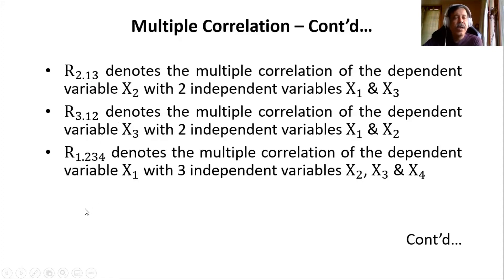It need not be only 3 variables. It can be more than 3 also. For example, R1.234 means x1 is a dependent variable and it depends on 3 different independent variables, which are x2, x3 and x4.